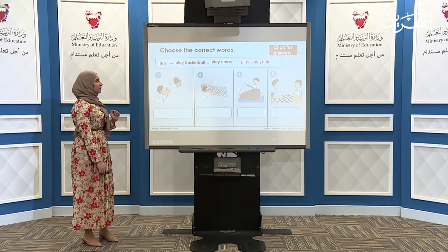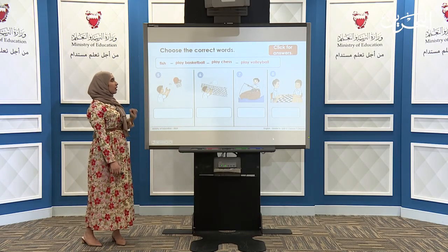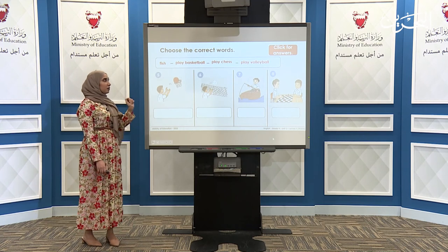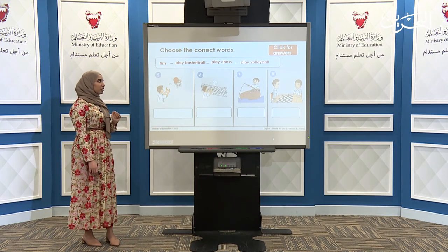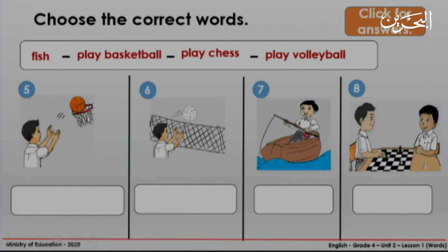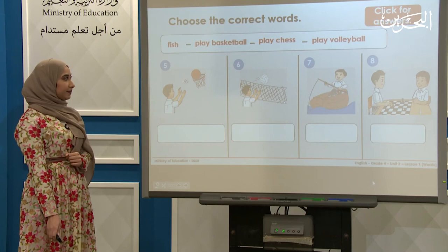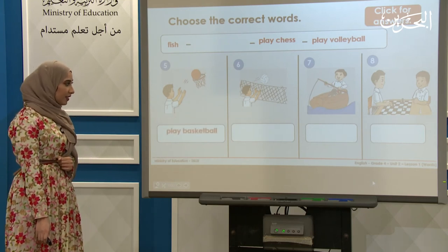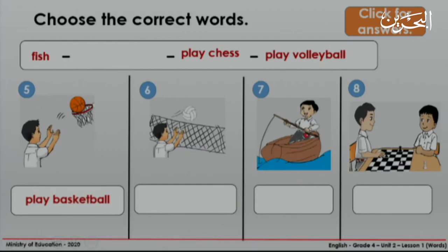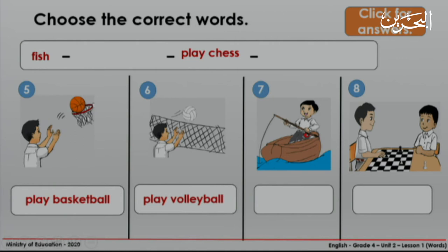Let's read again the new phrases and words: fish, play basketball, play basketball, play chess, play volleyball. Now write on your mini board the correct answer for number five. Excellent — it's play basketball. What about picture six? Well done, it's play volleyball.